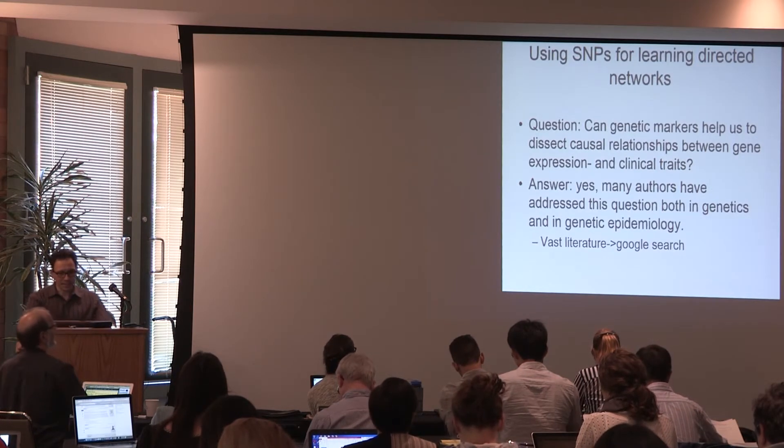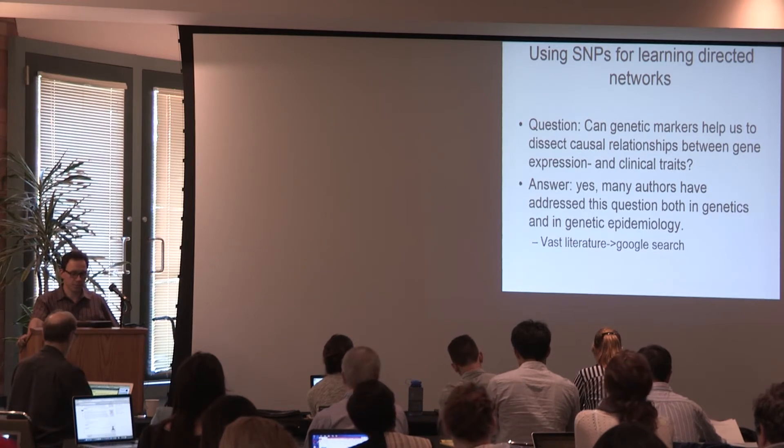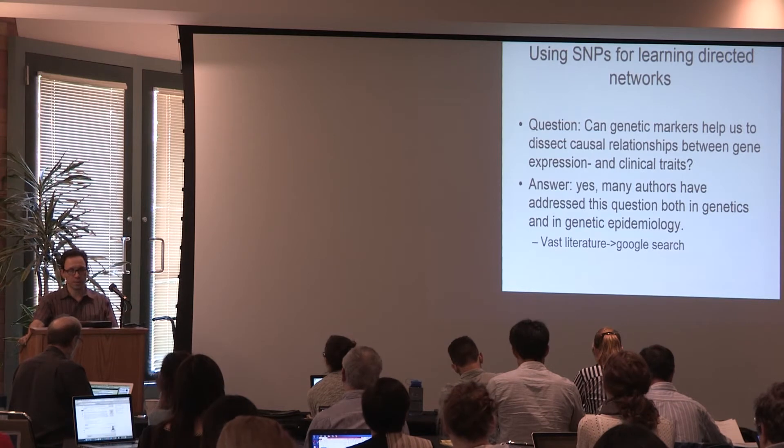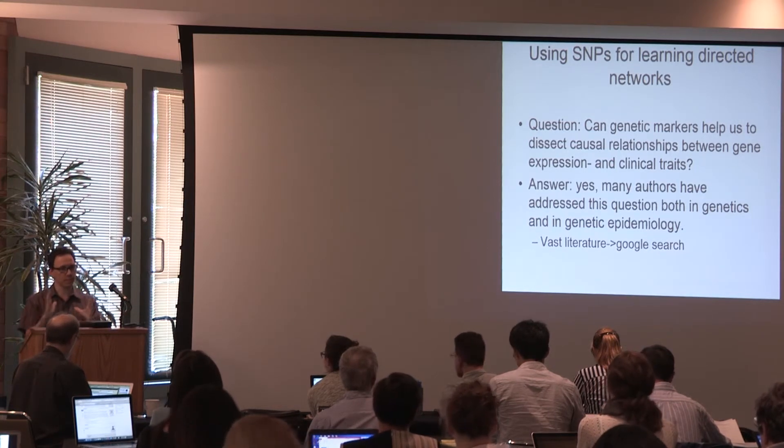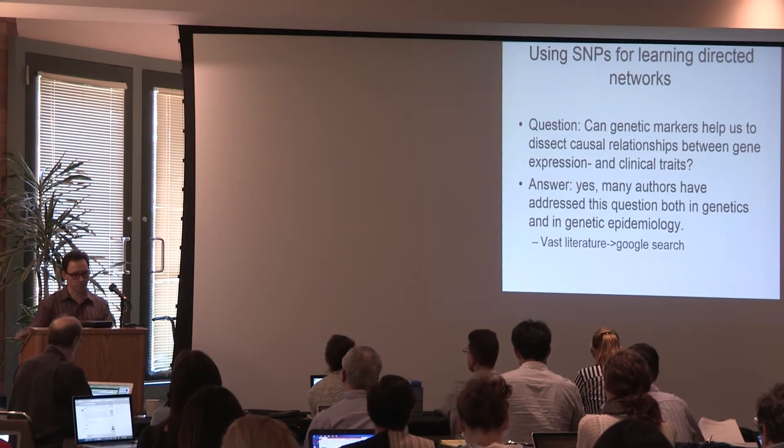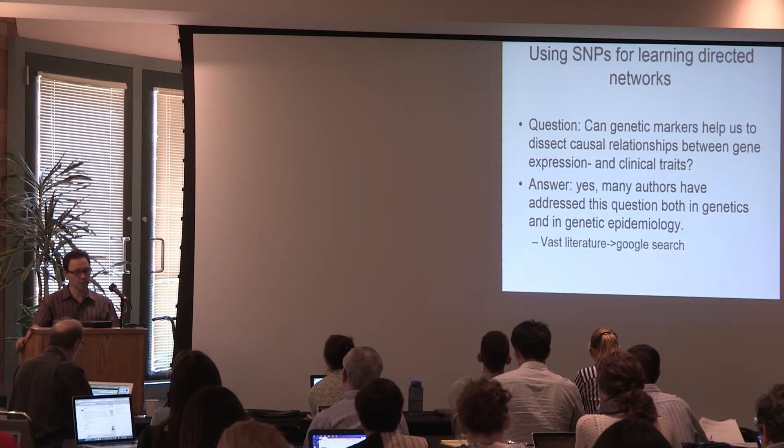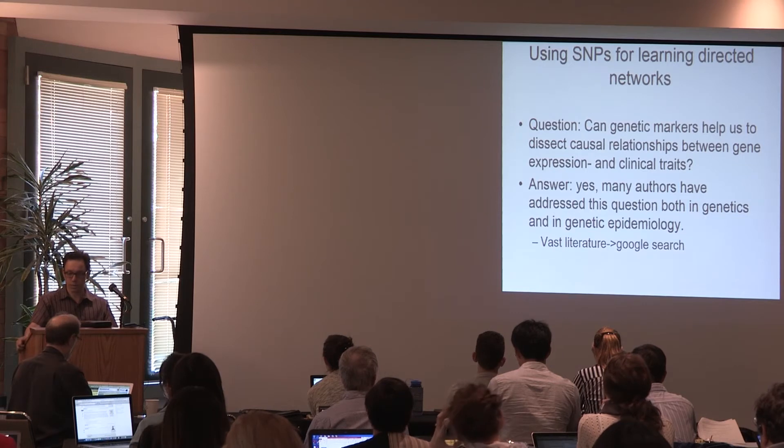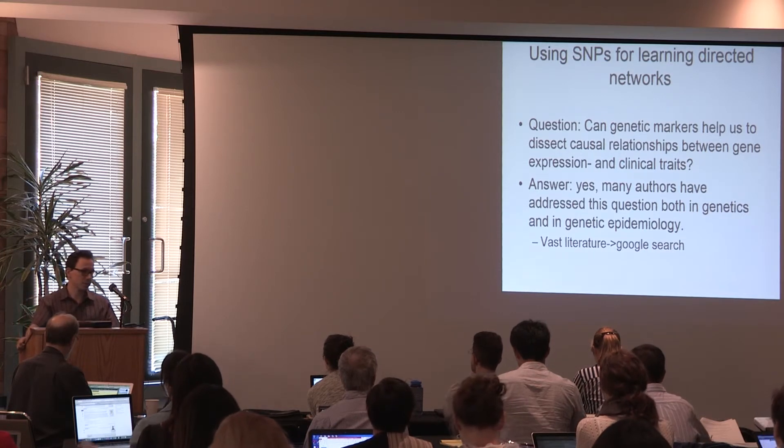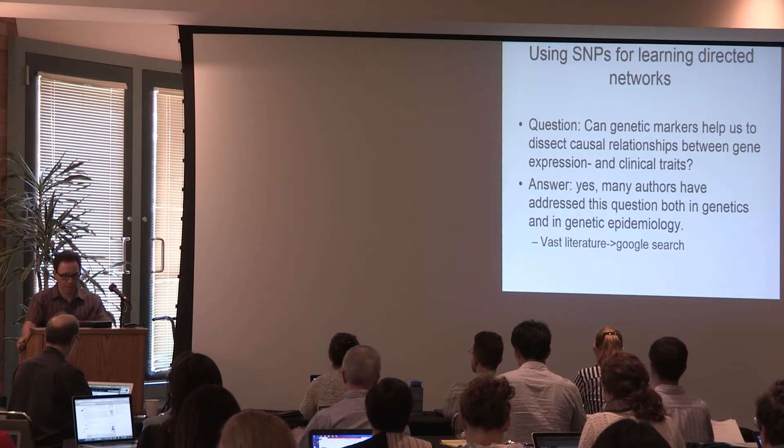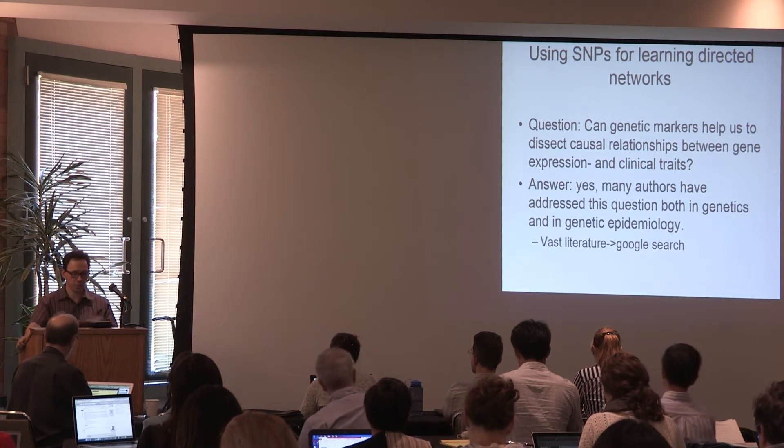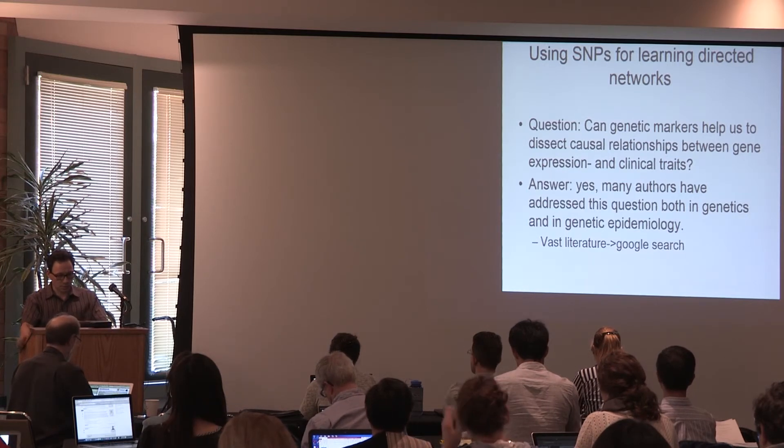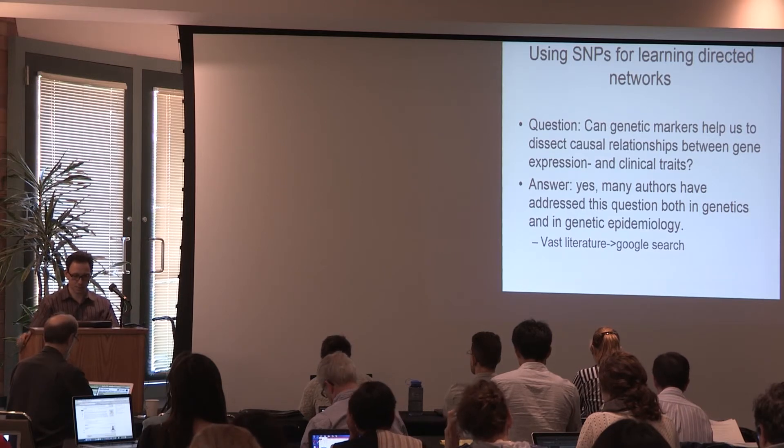The main idea is to use SNPs genetic markers for learning directed networks. So far, we've used an adjacency matrix which was symmetrical - an undirected network. But it would be far superior to infer directionality, to make causal statements. It has long been recognized that genetic marker data can lend themselves for making causal inference. There is a technique known as Mendelian randomization, which is known in epidemiology. This idea has been reinvented in different shapes several times. There's a vast literature on genetics and causal inference.